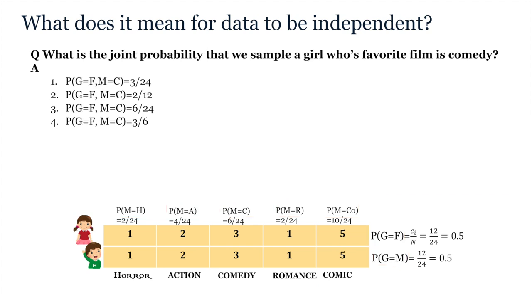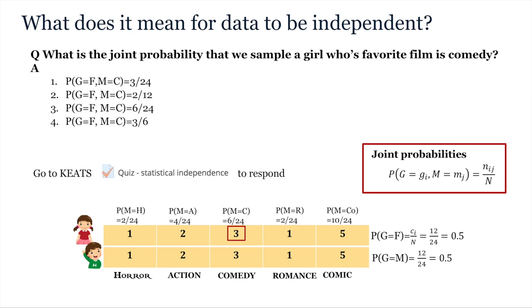What should we do on the other hand if we're interested in the joint probability that we sample a girl whose favorite film is comedy? Joint probabilities are instead estimated by calculating the proportion of samples that meet this exact combination to fall in some specific cell in the table. So for this combination we must look for the cell which represents girls who like comedy, which is here. What proportion of our data set is this? Please answer this in the Keats quiz.